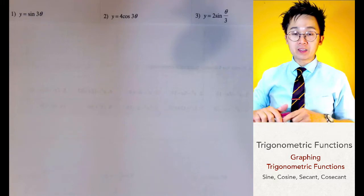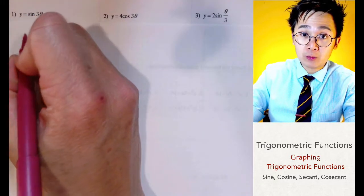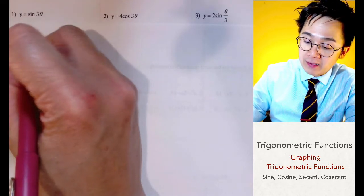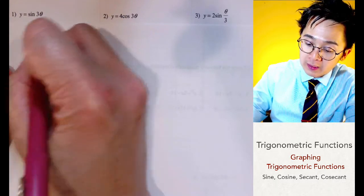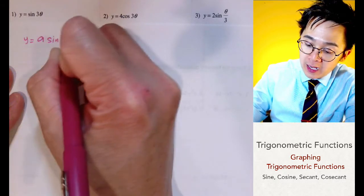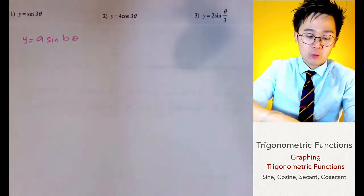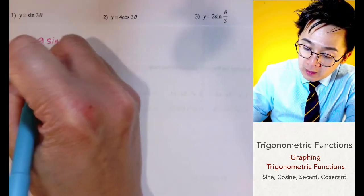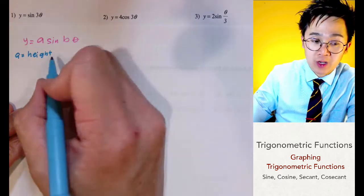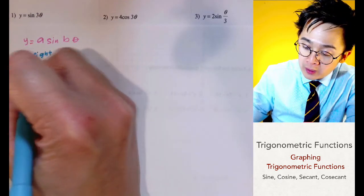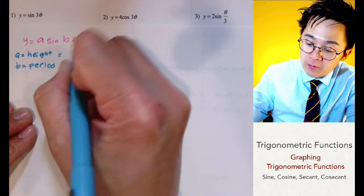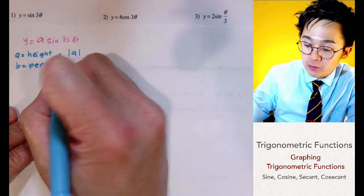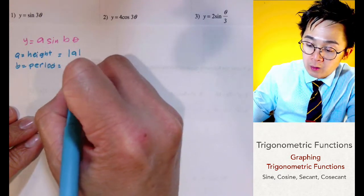To graph any trig function, we start with finding the amplitude and the period. A sine graph will always have the form y equals a sine b theta, where a is the amplitude or the height of the function and b is related to your period. The formula for finding the height is just the absolute value of a, and for the period we use two pi all over b.